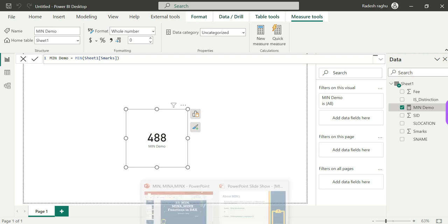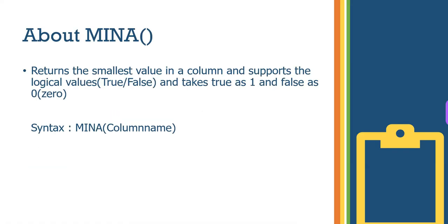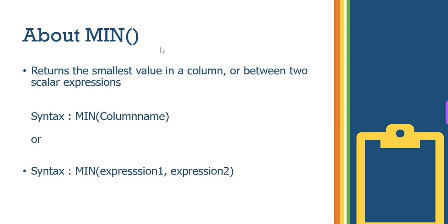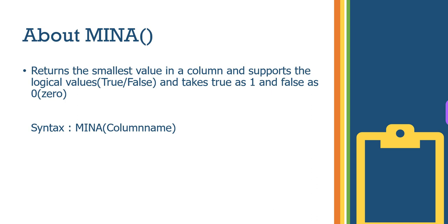So we get a MIN result. Next, we are going to learn about the MINA function. MINA supports logical values as well as numerical values. The key difference is that the MIN function only supports numerical values, while MINA — where 'A' stands for 'all' — supports all value types.